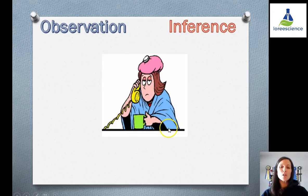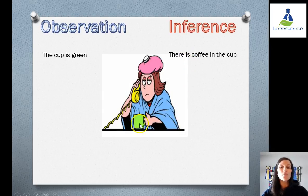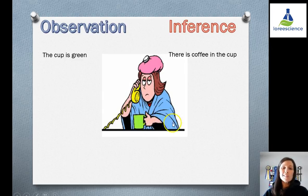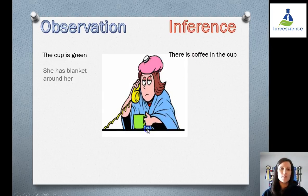For example, if we take a look at this picture — an observation would be that the cup is green. An inference would be that she has coffee in the cup, based on the fact that it's a cup with a handle and it looks like it might be morning. A lot of people drink coffee out of a cup that looks like that. That's an inference — we don't know for sure it's coffee. We can't smell it, we can't taste it. So that's an inference.